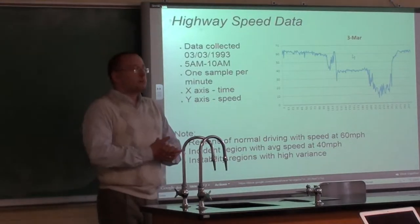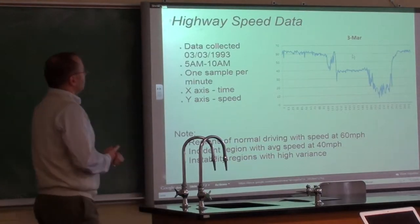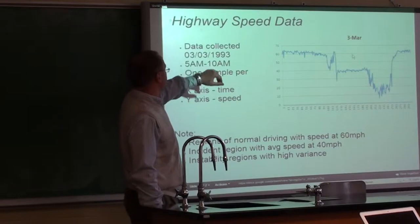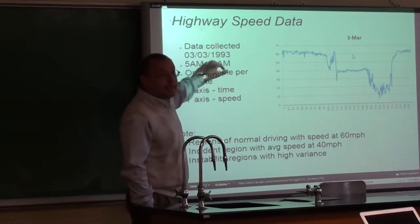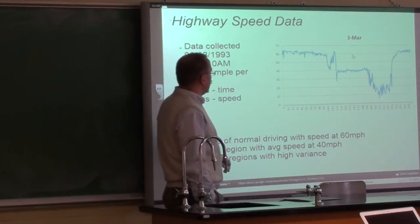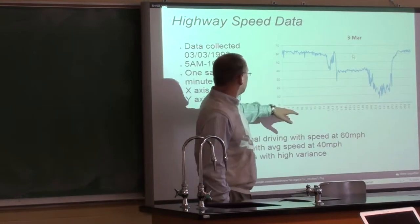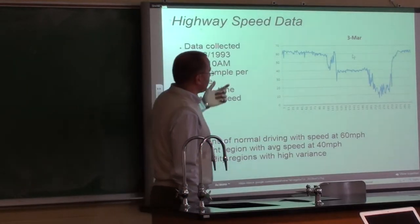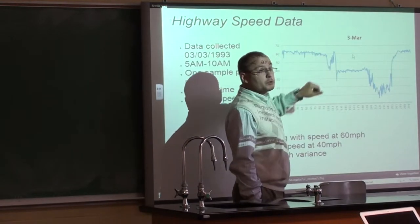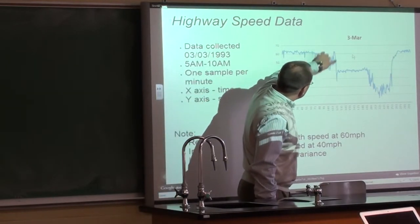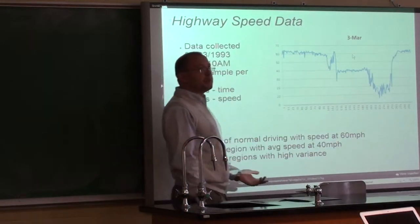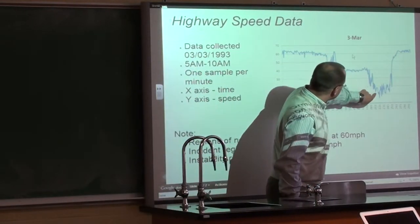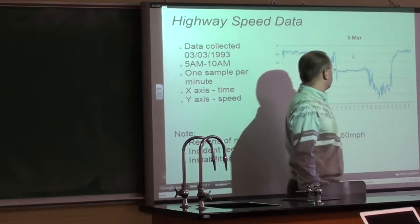Several months ago we discussed with Dr. Jamar what we can do with this data. This example is speed data collected March 3, 1993, and so far it's just the AM data, collected from 5 AM through 10 AM. The x-axis is time and the y-axis is average speed, collected at every minute. We can easily identify some regions of normal driving, and then at some point something started happening — looks like we have some minor incidents. The average speed dropped to 40 miles per hour, and it recovered by 10 o'clock in the morning.